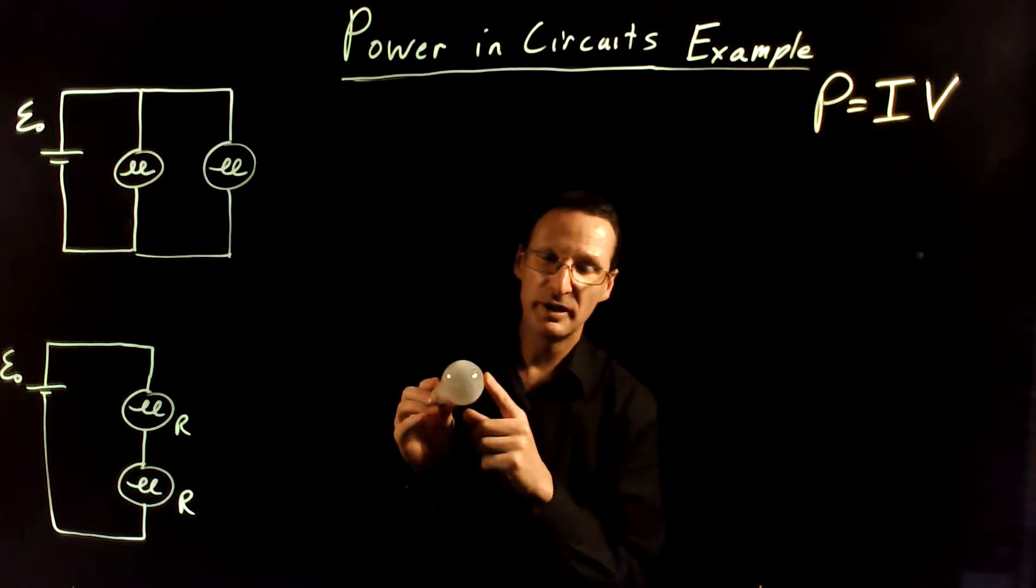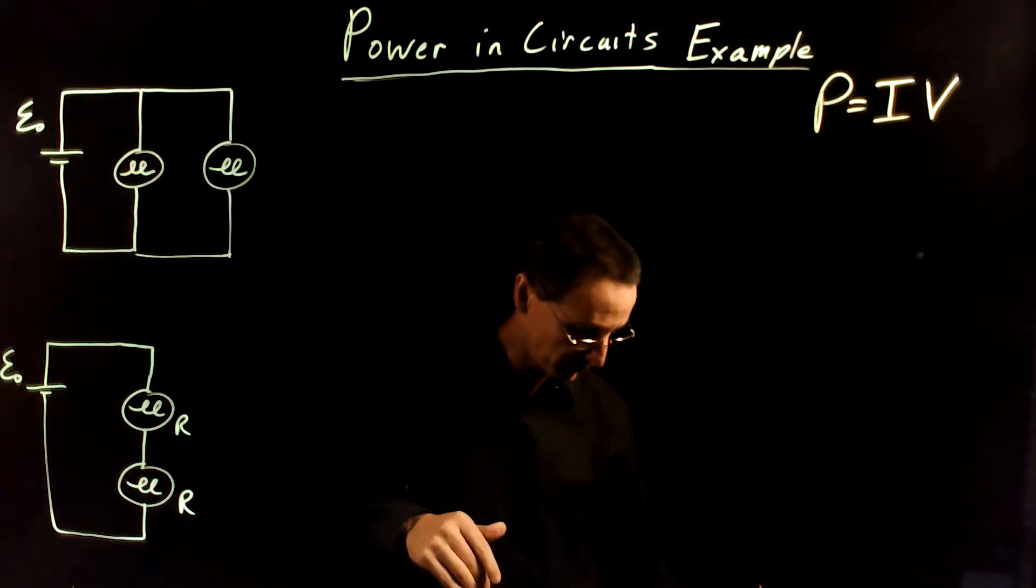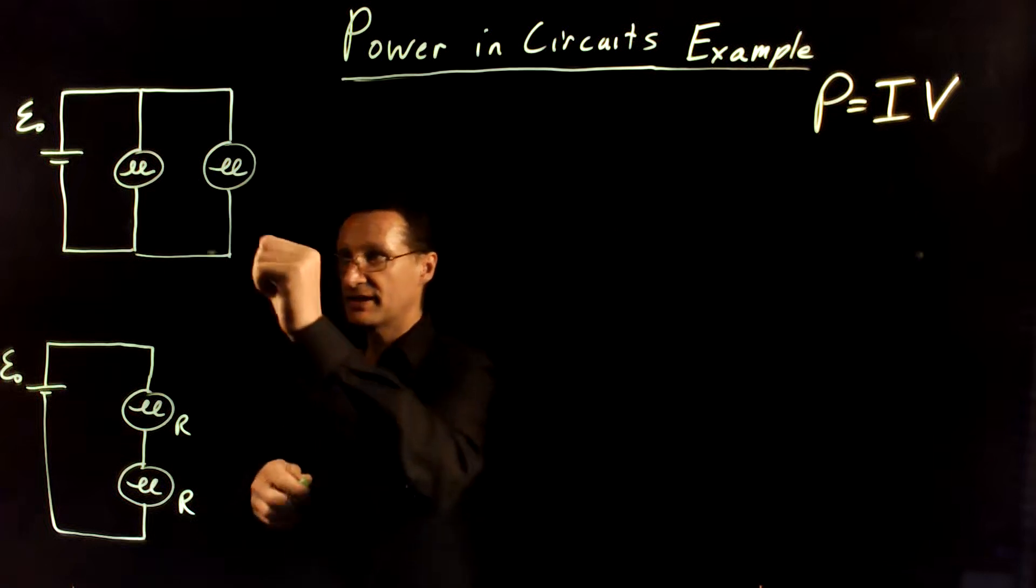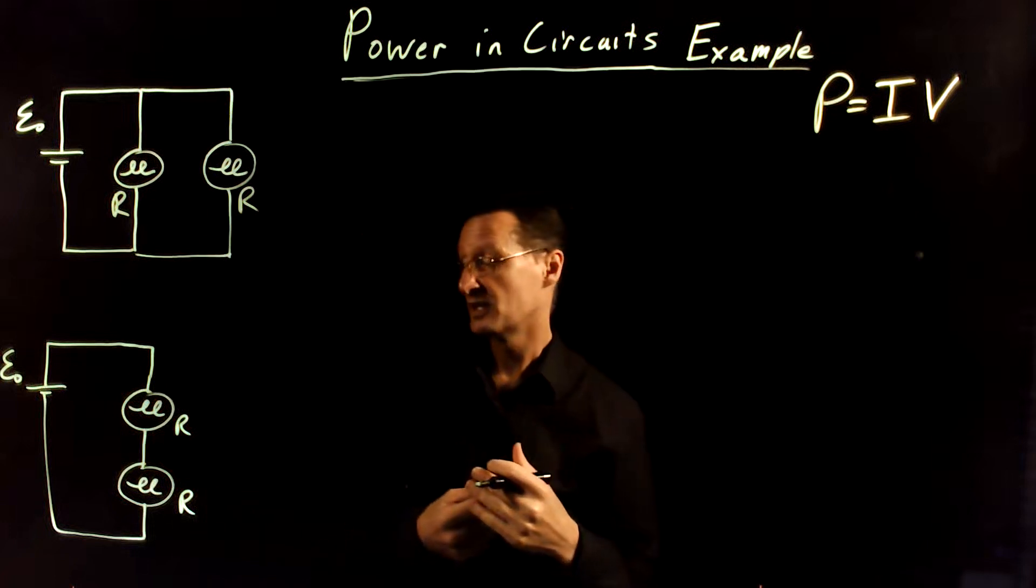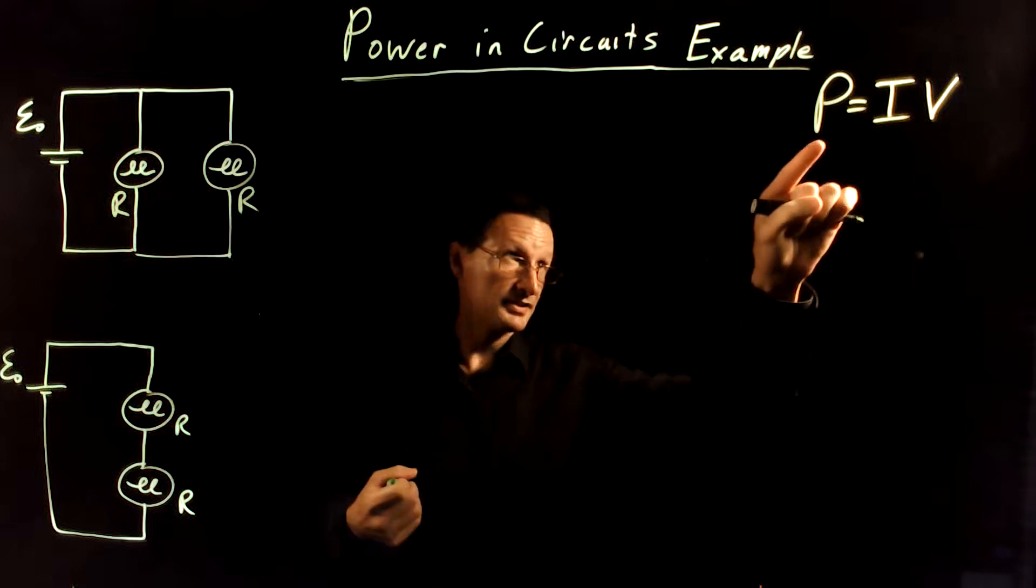Now, it's a little bit of a fib that the resistance actually does change a little bit as these heat up, but we're going to ignore that for our purposes here. So, we're going to treat these as fixed resistors. So, they're going to have a fixed resistance R. So, for each of these, we want to compare the brightness of these bulbs.